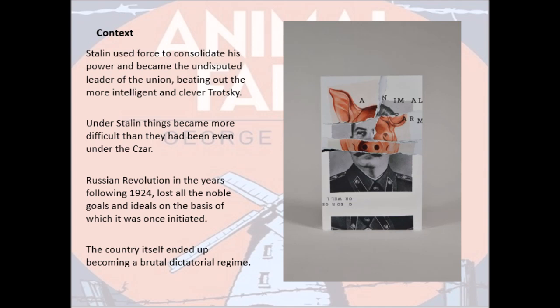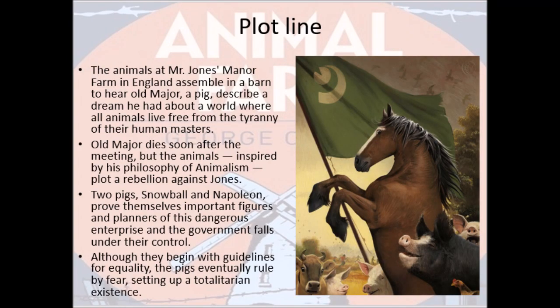Stalin beat out the more intellectual Trotsky, had him banished, exiled, and murdered. Under Stalin, things became even more difficult than they had ever been under the Tsar — there was famine in the country, the oppressed working class was denied their rights, and purges, show trials, and targeted killings occurred. The Russian Revolution, in the years following 1924 under Stalin's regime, lost all the noble goals and ideals on which it had once been initiated, ending up as the brutal dictatorial regime it had once hoped to escape.